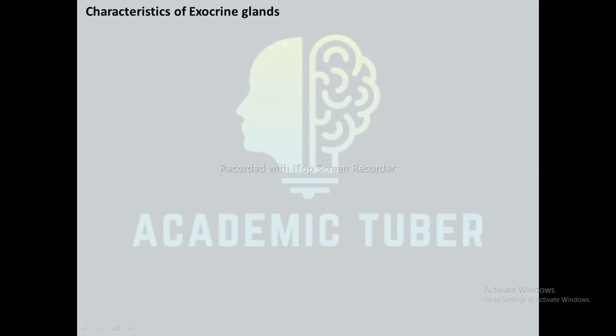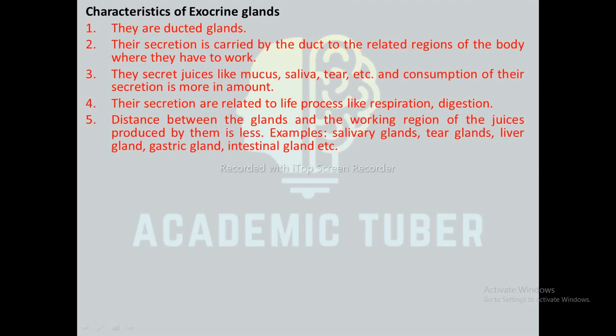Exocrine glands are glands that consist of ducts and are therefore called ducted glands. The secretion is carried by the duct to the related region of the body where it has to work. They secrete juices like mucus, saliva, and tears, and the consumption of their secretion is more in amount. The secretions are related to life processes like respiration and digestion, and the distance between the gland and the working region is less. Examples include salivary glands, tear glands, liver, gastric glands, and intestinal glands.